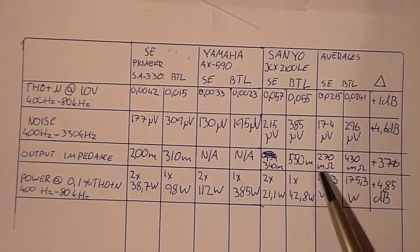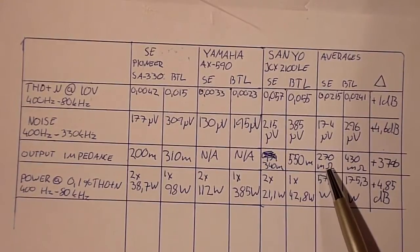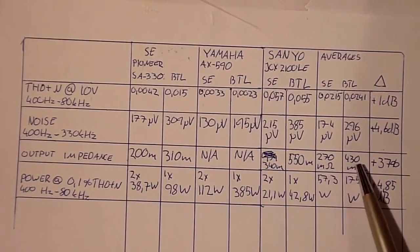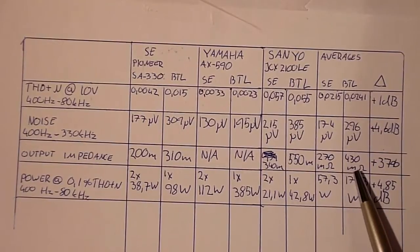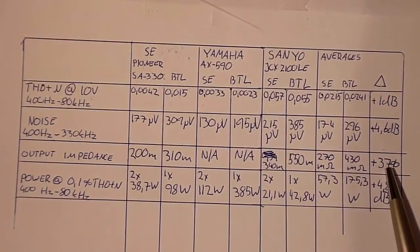And they averaged 270 milliohms output impedance single-ended, and 430 when running bridged, and that's a 37% increase in output impedance.